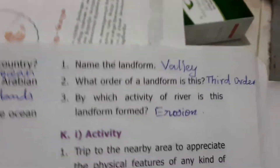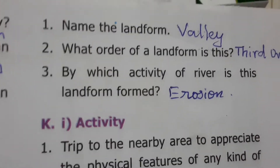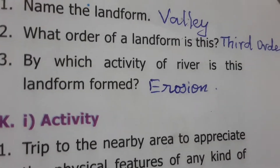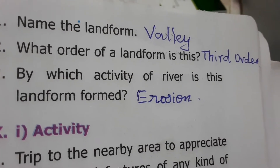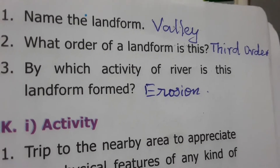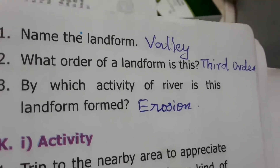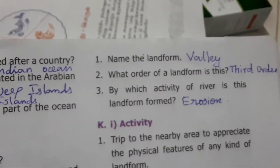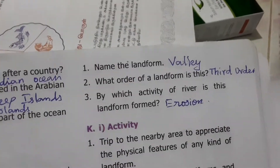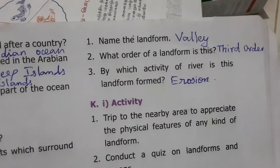Picture study: What is the landform shown in the picture? It is a valley. What order of landform is this? It is a third order landform. By which activity is this landform formed? By river erosion.